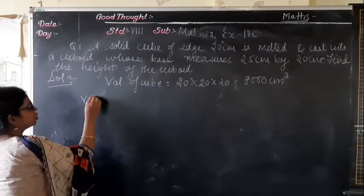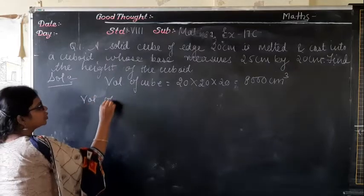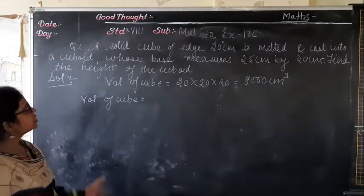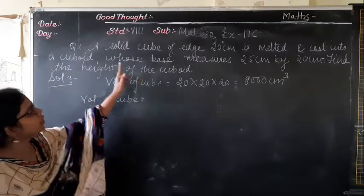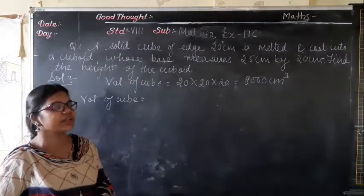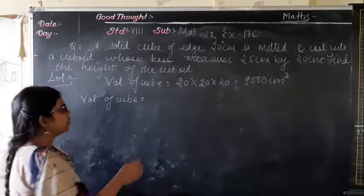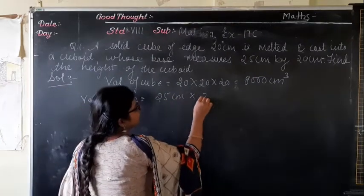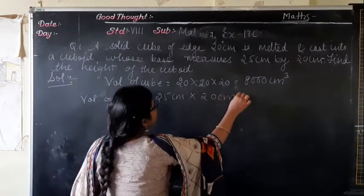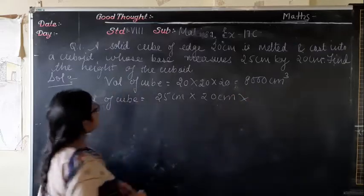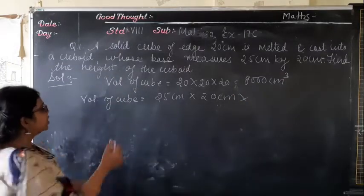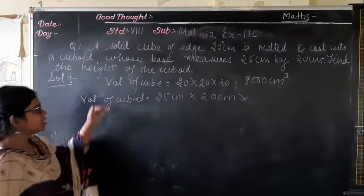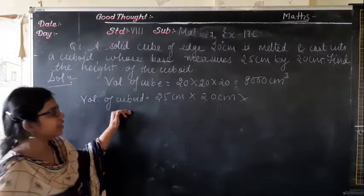The volume of the cuboid — you have to find out — and it takes the shape of a cuboid whose base measures are 25 cm and 20 cm. You have to find out the height of the cuboid. This is before melting and this is after melting.